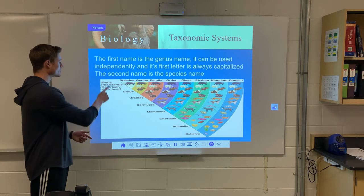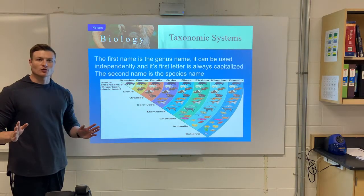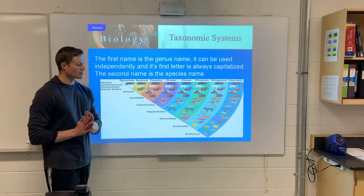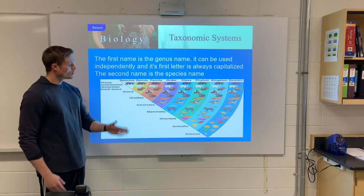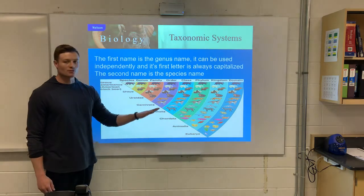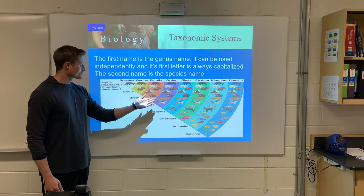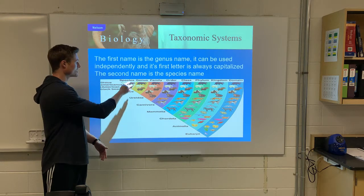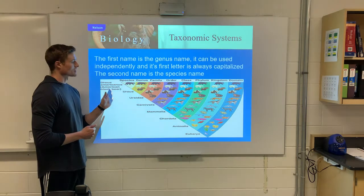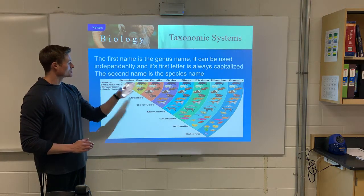For example, the American black bear would be Ursus — its genus — followed by its species, americanus. Going from broad to specific, we start with the domain — in this case Eukarya — then kingdom Animalia, phylum Chordata (anything with a backbone), class Mammalia, order Carnivora, family Ursidae (bears), genus Ursus, and finally species americanus. So from most broad to most specific: domain, kingdom, phylum, class, order, family, genus, species.